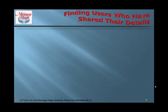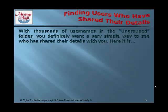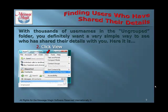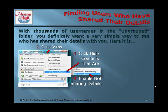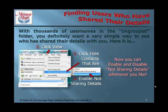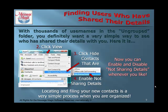Finding users who have shared their details. With thousands of usernames in the ungrouped folder, you definitely want a simple way to see who has shared their details with you. Go to the top of your Skype window and click on View, then click Hide Contacts That Are, then enable Not Sharing Details. Now you can enable and disable Not Sharing Details whenever you like. Locating and filing your new contacts is a very simple process when you are organized.